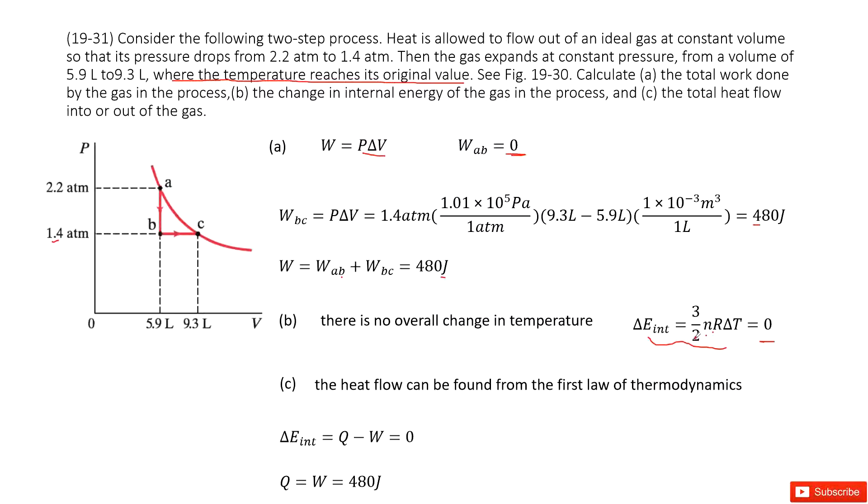The next part asks for the total heat flow into or out of the gas. We can write the change in internal energy: delta E_internal equals Q minus W. In this case, delta E_internal equals zero, W is 480J. Can you find Q? Yes, Q just equals W, 480 joules.